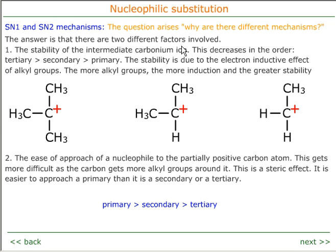So why are there different mechanisms? There are two different factors involved. In theory, tertiary haloalkanes could react via an SN2 mechanism, but the activation energy is very high because the tertiary haloalkane is surrounded by large bulky methyl groups, making attack very difficult. On the other hand, a primary haloalkane could proceed via SN1 and produce a carbonium ion, but this would be very high energy as it's only stabilised by one alkyl group. So the ease of carbonium ion formation goes tertiary > secondary > primary, while ease of nucleophilic approach goes primary > secondary > tertiary.